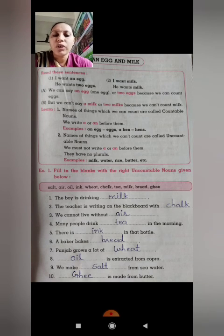Number 9: We make salt from sea water. Yani ki joh dariya ka paani hota hai us mein se salt banta hai. Number 10: Ghee is made from butter. Joh ghee woh butter mein se banta hai.